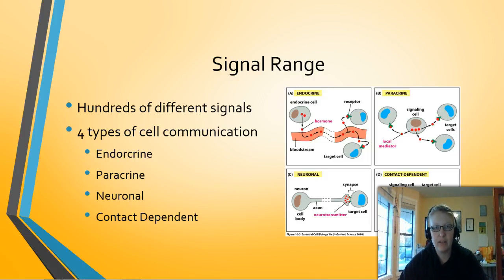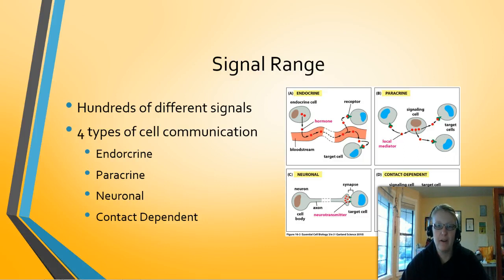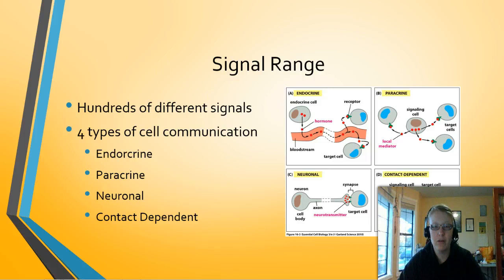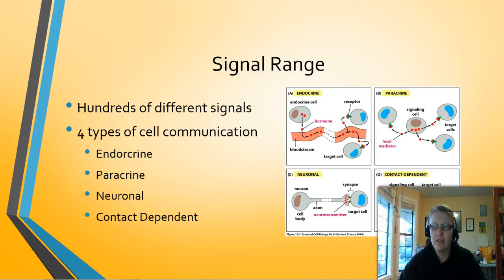The next type is paracrine, where signals are excreted from cells into the extracellular matrix and picked up by nearby cells — a much more short-range signal network. Neuronal signaling is where nerves pass the signals, which we discussed in unit 3. The last type is contact-dependent, and the main example we think about is immune cells, which come by and touch other cells to check that they are still normal healthy cells. Make sure you understand these four types, how they work, and how they differ from each other.